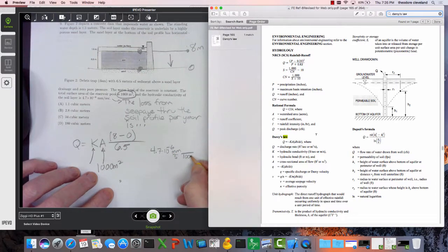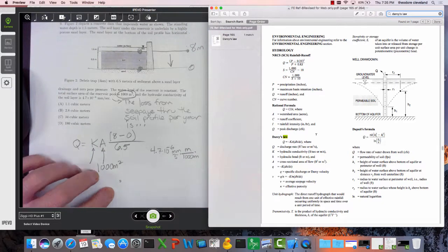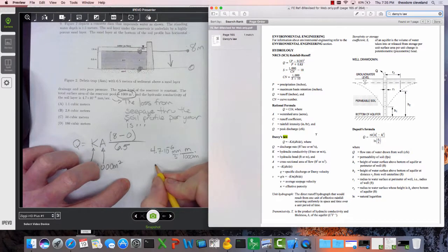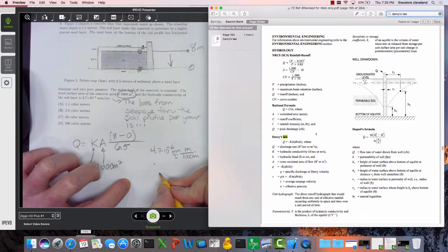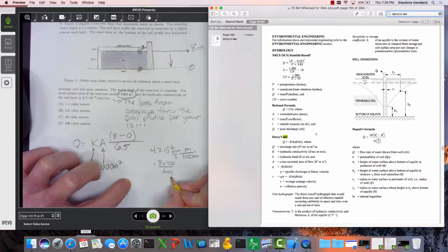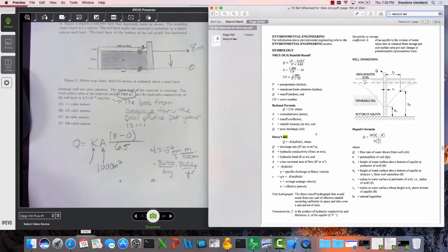There's a thousand millimeters in a meter. There are 86,400 seconds in one day, and we'll use a typical year which is 365 days per year.